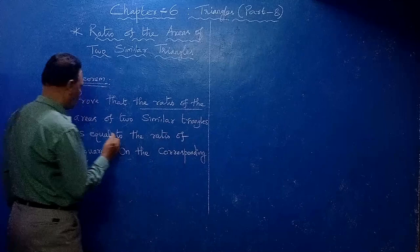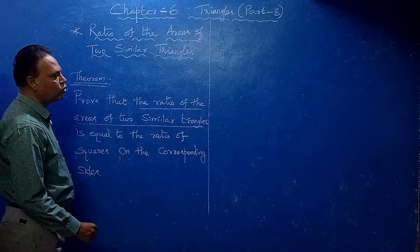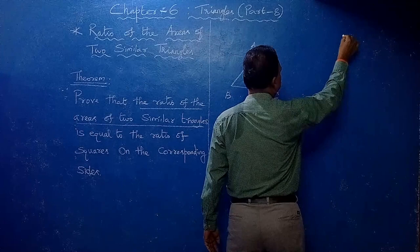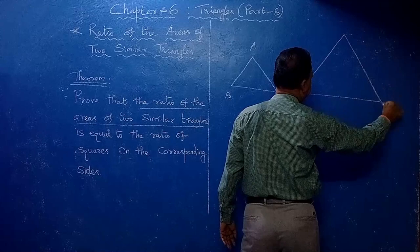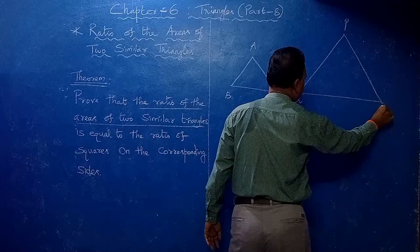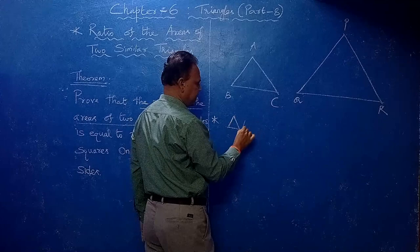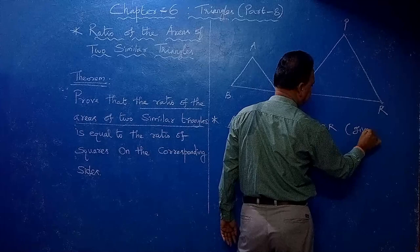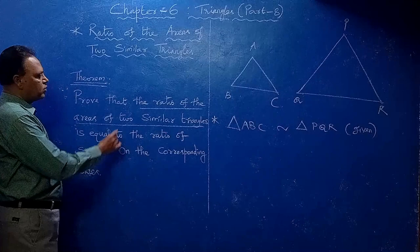So the ratio of the areas of two similar triangles — you have to take two triangles: Triangle ABC and Triangle PQR. It is given that these two triangles are similar, that is Triangle ABC is similar to Triangle PQR.